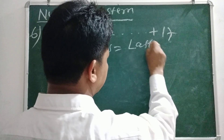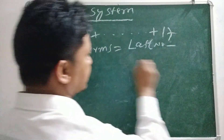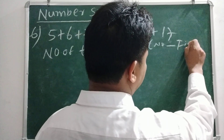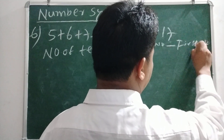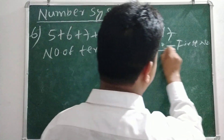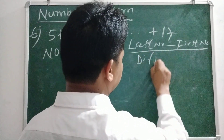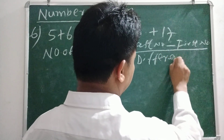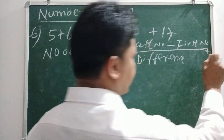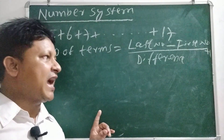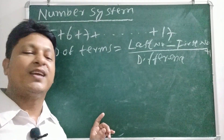The number of terms is equal to last number minus first number by difference, plus one.